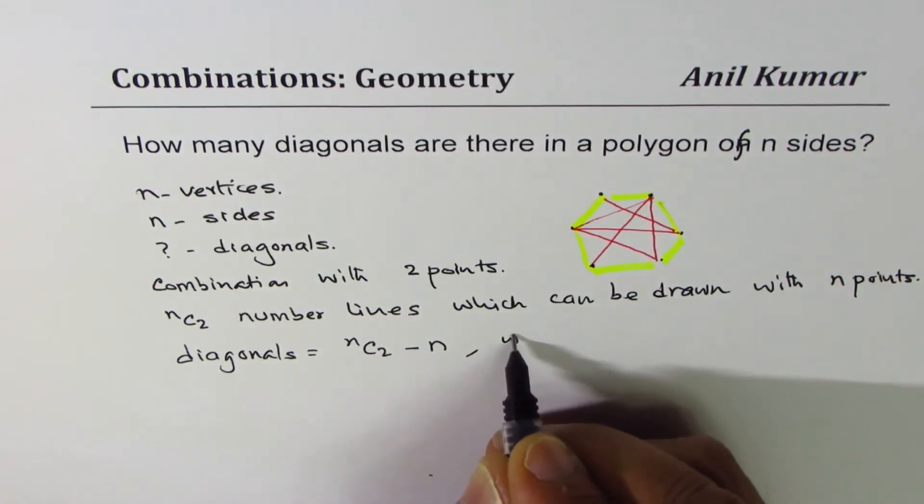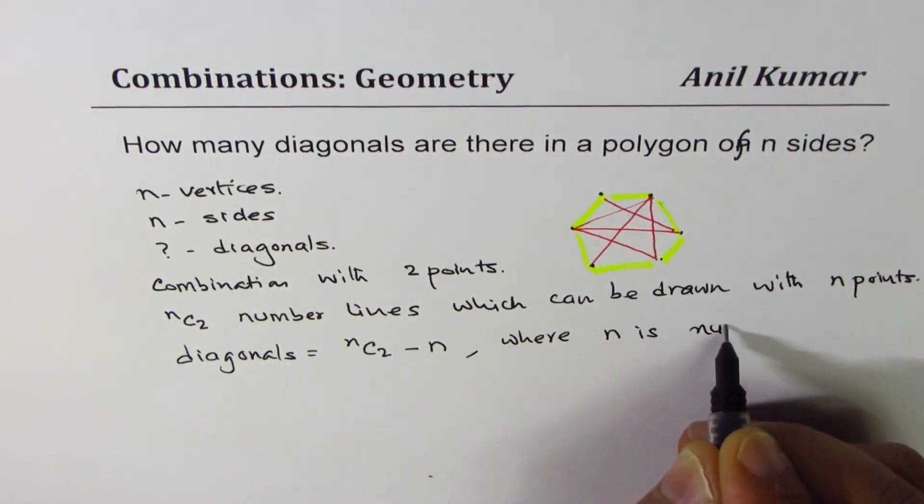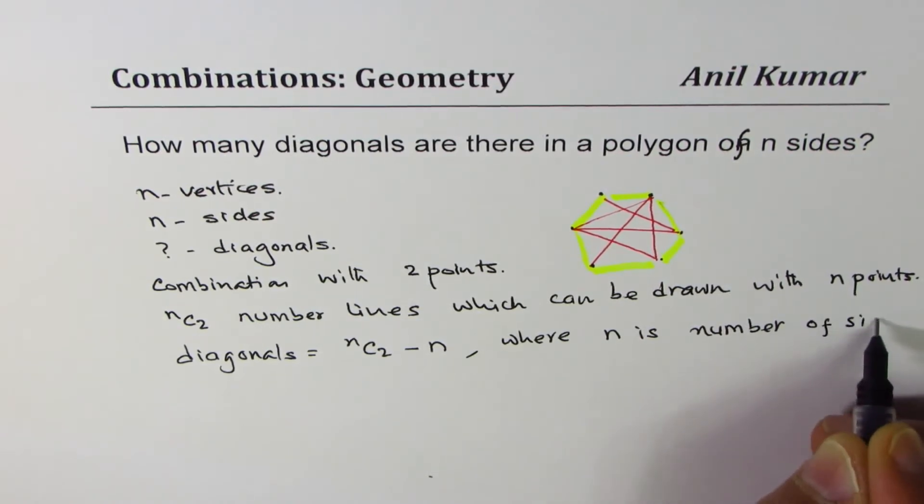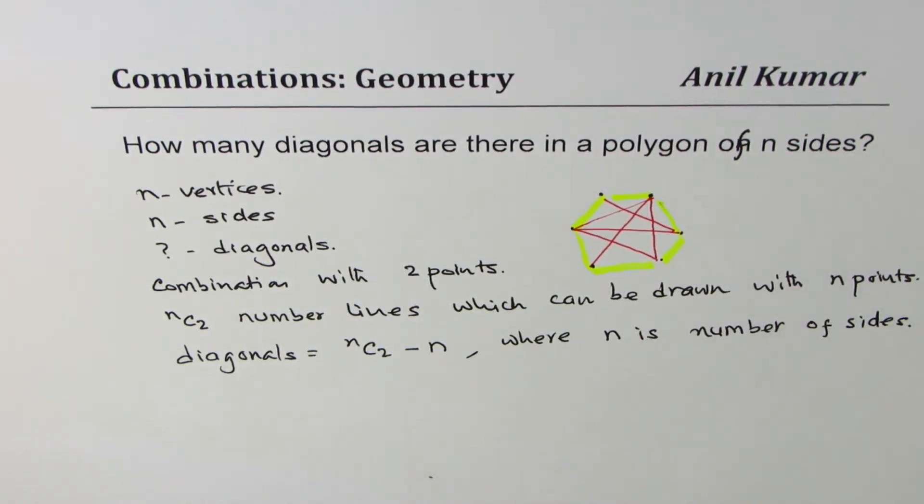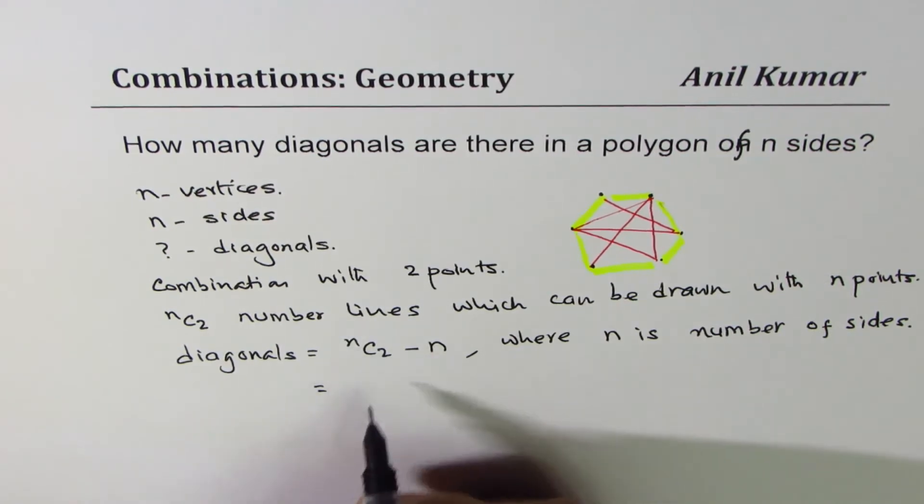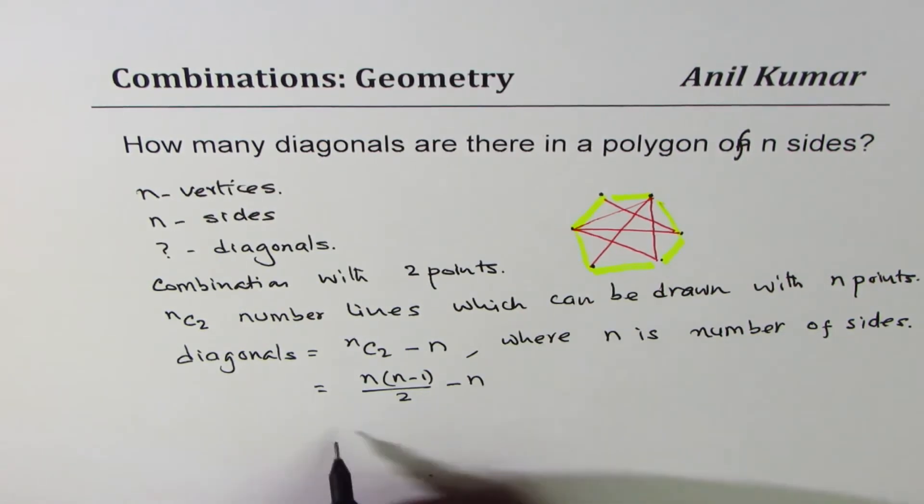Where n is number of sides. So that is how we get number of diagonals. The number of diagonals is nC2 minus n. nC2, we could write this as n times n minus 1 over 2, minus n. And you would simplify this.